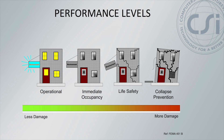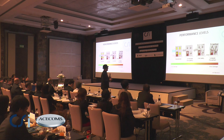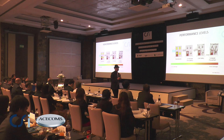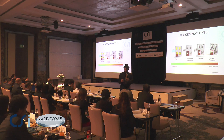The third one is life safety, in which there will be a lot of damage. Probably you can't use the building or you're going to require a lot to replace it. And the last one is collapse prevention, where the structure doesn't collapse, but after the earthquake, you've got to tear it down. So these are the various levels of performance that can be specified.